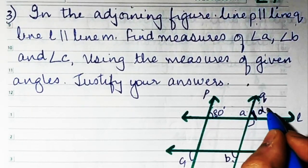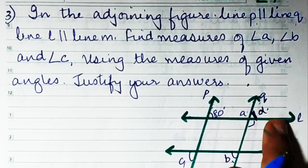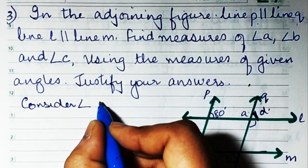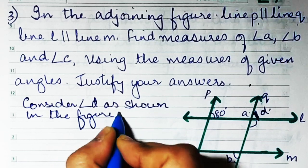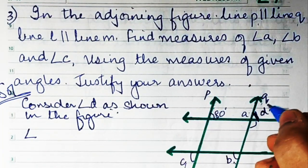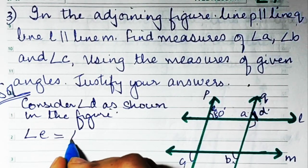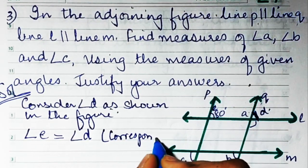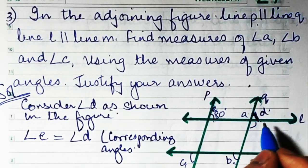This angle is 80°, so d is 80°. Now consider angle d as shown in the figure. We also label angle e. Angle e is going to be equal to angle d because they are corresponding angles — since p is parallel to q, this angle equals angle d.